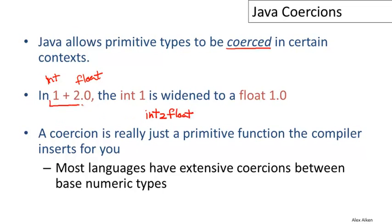So really, this expression here gets converted to the expression int_to_float applied to the number 1 plus 2.0. So coercions are probably best thought of as a convenience for you, the programmer, to let you avoid having to write some function calls.